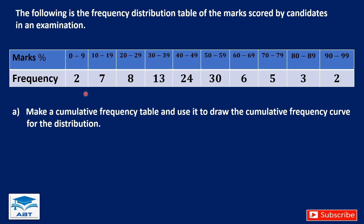I am going to use this example for all my explanations. The following is the frequency distribution table of the marks scored by candidates in an examination. We have the marks in percentage and the frequency. Two candidates scored from 0 to 9, from 10 to 19 we have 7 candidates, from 20 to 29 we have 8, and so on.